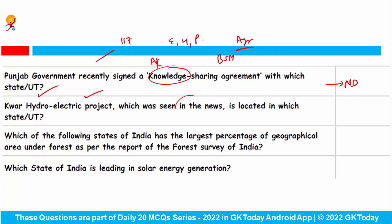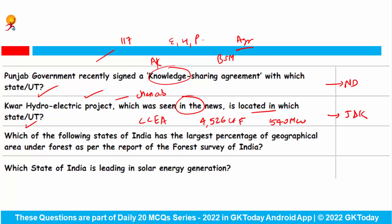Kwar hydroelectric project, which was seen in the news recently, is located in which state or union territory? The Cabinet Committee on Economic Affairs has approved an investment of 4,526 crore rupees for the 540-megawatt Kwar hydroelectric project. It is located on the Chenab river in the union territory of Jammu and Kashmir's Kishtwar district. The Kwar hydropower project will be implemented by Chenab Valley Power Projects Private Limited, a joint venture between NHPC Limited and J&K State Power Development Corporation.